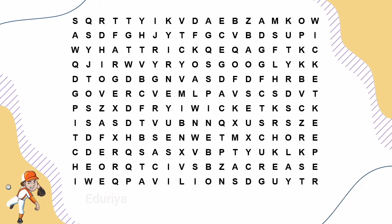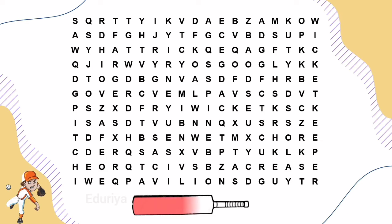It is one of the two sets of three stumps and two bails at either end of the pitch. This is known as Wicket.